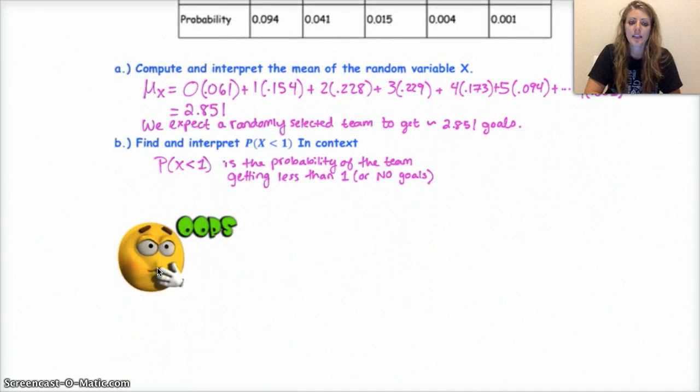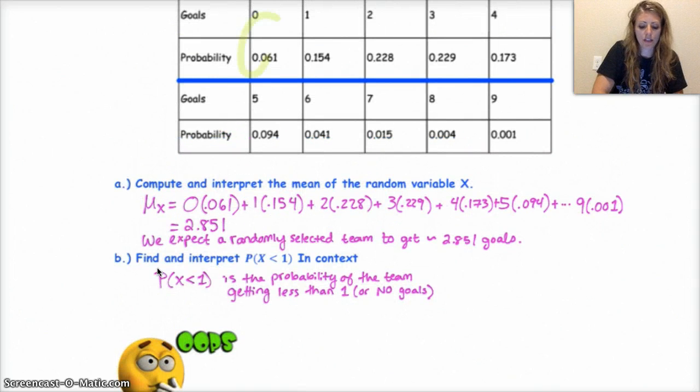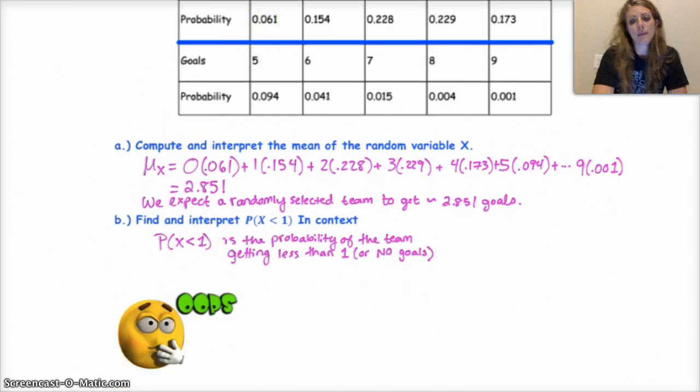B is find and interpret the probability that X is less than 1 in context. The probability that X is less than 1 is the probability of the team getting less than 1 goal, or no goals. It's the same thing. The probability of that happening is just that 0.061. I'll show you how to do this in your calculator as well. If you do this in your calculator, you need to remember two things. One is you still need to show your work. But showing your work could be doing the first two plus dot dot dot and then plus the last one. So you could skip writing out all of them if you did it in your calculator.